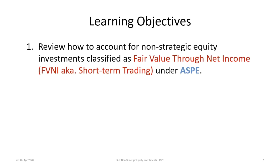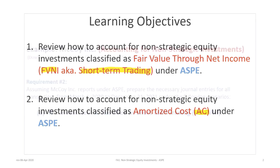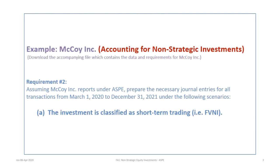There are two basic learning objectives for this tutorial. First is to review how to account for non-strategic equity investments classified as fair value through net income, or FVNI — also known as short-term trading under ASPE. The second learning objective is to review how to account for such investments classified as amortized cost, or AC, under ASPE.